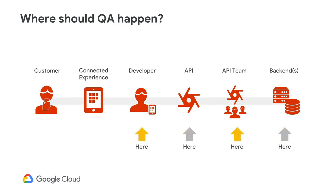Your team should actively participate and have a culture of continuous quality assurance as well. Developers and key team members must consistently strive to find, prevent, and correct issues. Quality assurance should also be an active process in deploying your connected experiences. This can be automated through continuous integration and delivery tools that can also help with unit testing, integration testing, and performance testing.